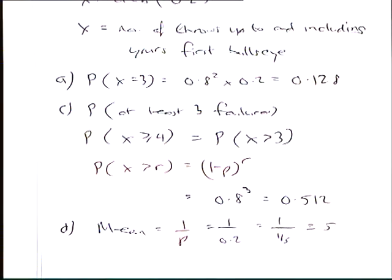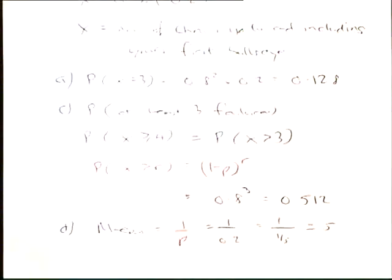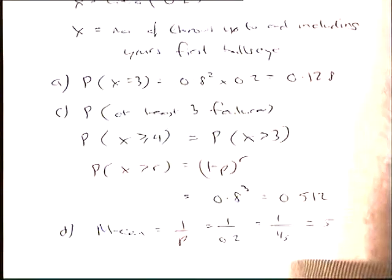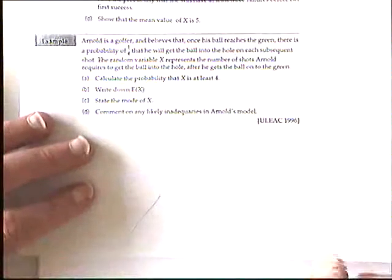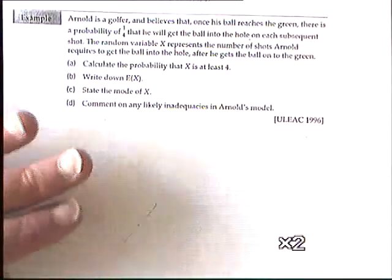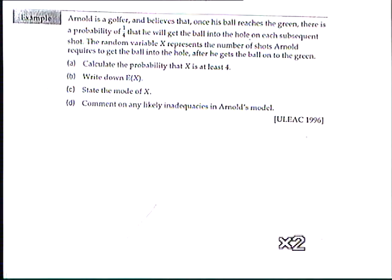Which brings us then on to a golfer question from 1996. Arnold, a golfer. Arnold is a golfer and believes that once his ball reaches the green, there's a probability of a quarter he will get the ball into the hole on each subsequent shot. The random variable X represents the number of shots Arnold requires to get the ball into the hole after he gets the ball onto the green.